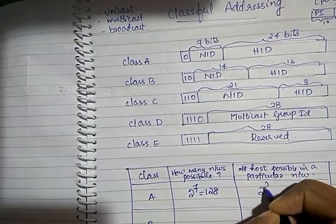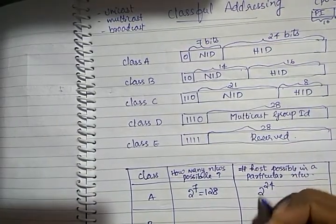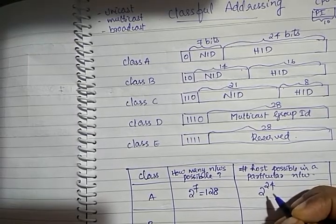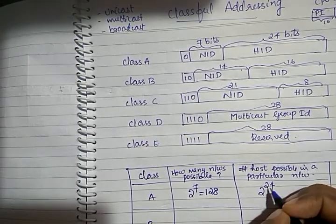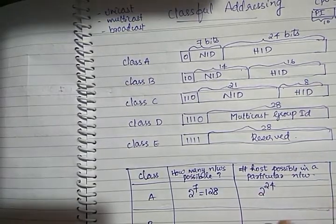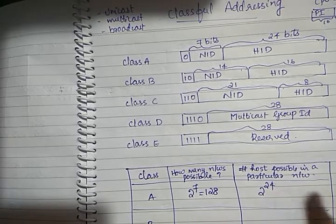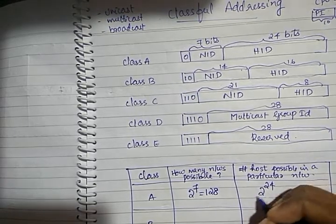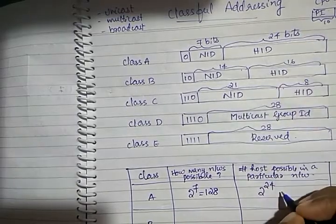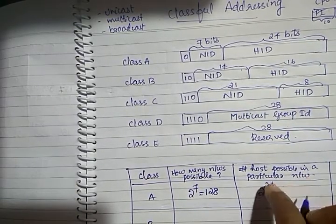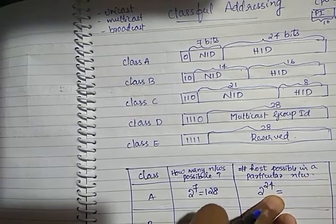Actually, this 2 to the power 24 combination is not used exactly — 2 addresses are reserved for special purposes, which we will see soon. As of now, understand that approximately 2 to the power 24 host combinations are possible within a particular Class A network. It is a very big number.